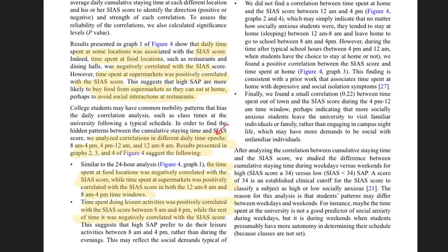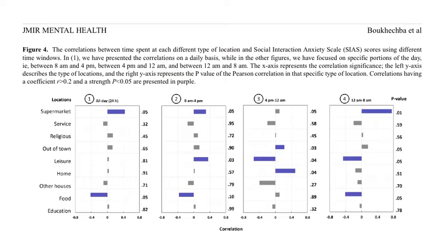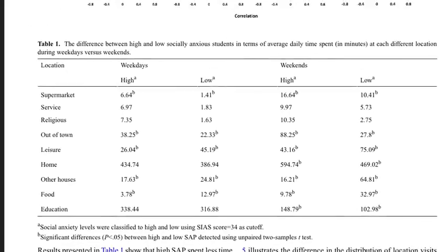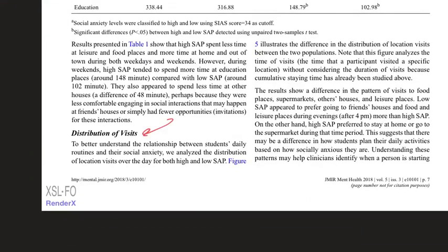The authors designed multiple daily time epochs for a more fine-grained analysis using the cumulative staying time feature group. Figures and tables shed further light on these correlation results. They then analyze distributions of visits for both high and low social anxiety participants, reporting distinguishing attributes associated with each group and making conjectures about the results.